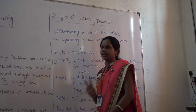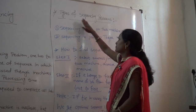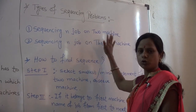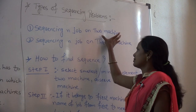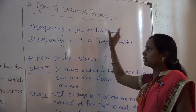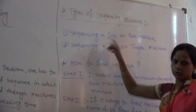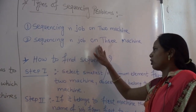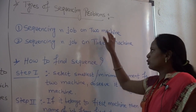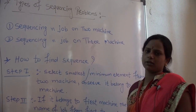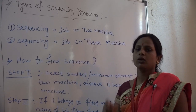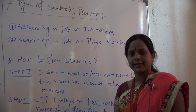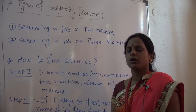Next, in sequencing there are two types. The first type is sequencing n jobs on two machines — if two machines are given, you have to process n jobs (two, three, four, five, six, or any number). The second type is sequencing n jobs on three machines. So in this sequencing problem we study only these two types.